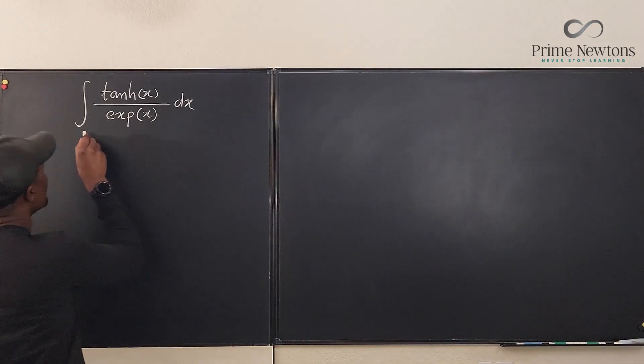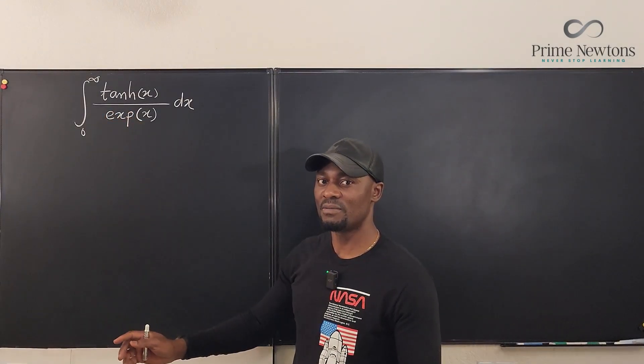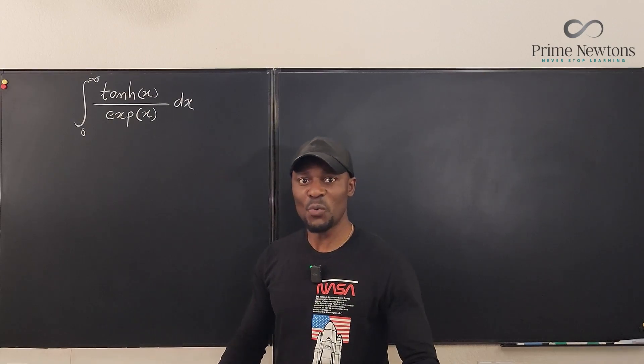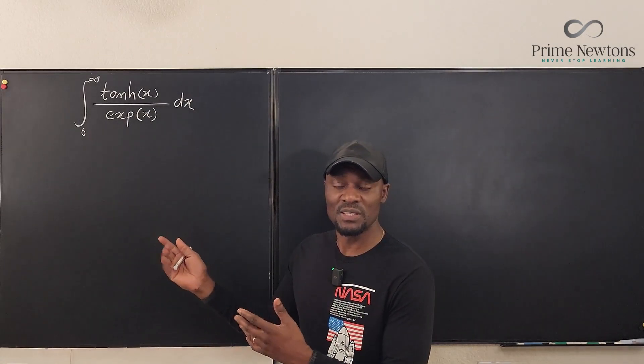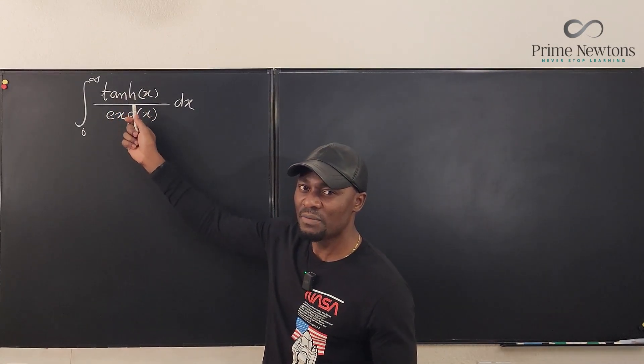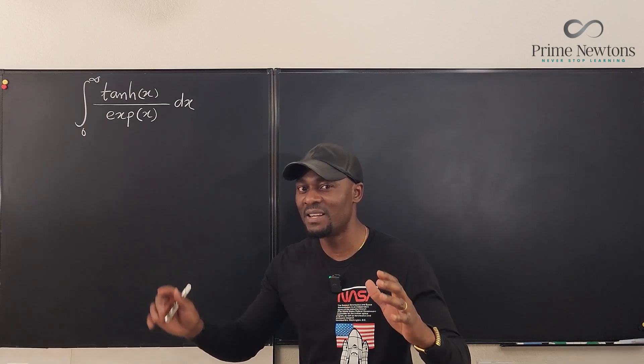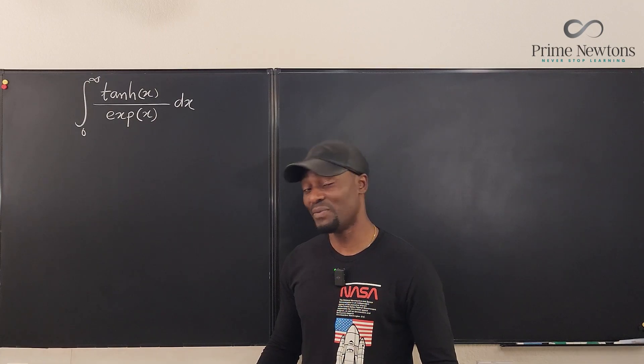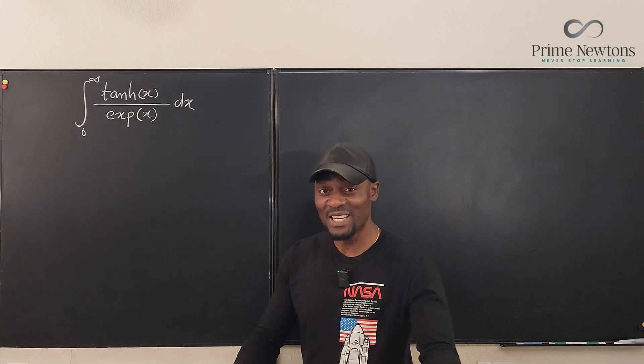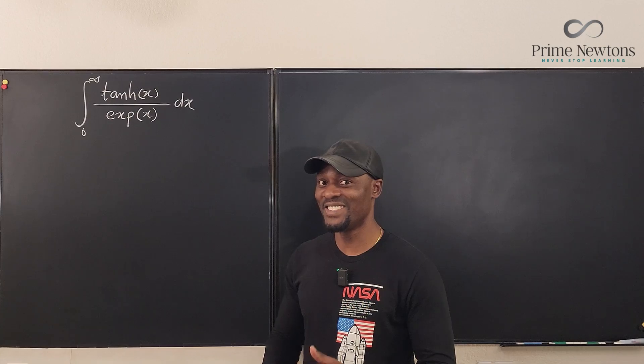But we're integrating from zero to infinity. Usually when you get these improper integrals, they scare you because most people don't want to deal with anything improper. They like to be proper. But we have to find a way through this. Remember that the hyperbolic tangent function is expressed in terms of e, and this also is in terms of e. So by the time you combine everything in terms of e, something nice is going to show up. Before we move on, remember to like this video, share it, and leave a comment. If you're not subscribed, please subscribe. I need you. Thank you. Let's get into the video.